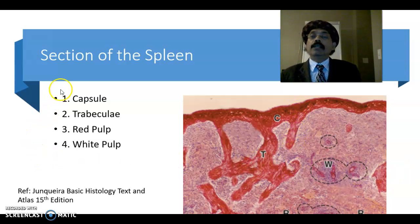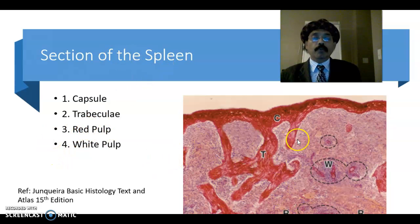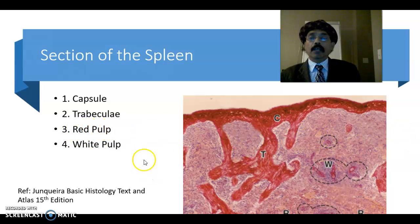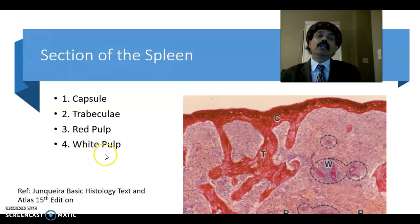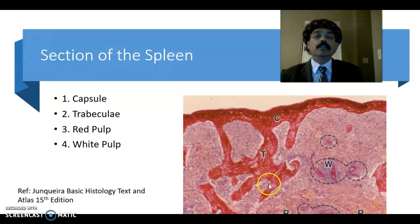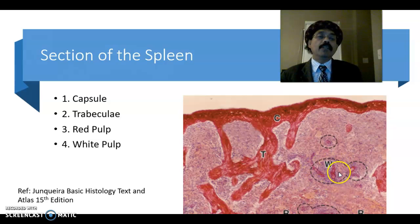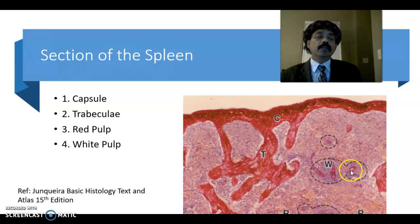The spleen has red pulp and white pulp. Most part of the spleen is covered by the red pulp, and a significant part is covered by the white pulp. They are intermingled together. The white pulp makes a lymphatic nodule, and at the periphery of the lymphatic nodule we have the central artery. We also have a lymphatic sheet around the artery.